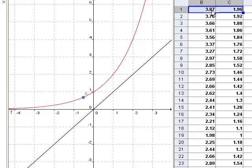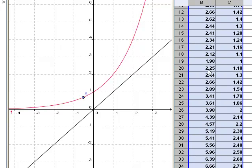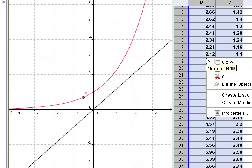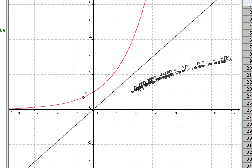And now, all I have to do is highlight all these points, and I'm going to right click, and I am going to create a list of points. And as you can see, when I create that list of points, it starts to plot the inverse for me.